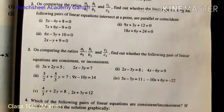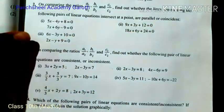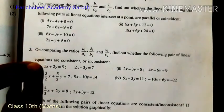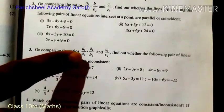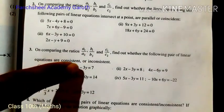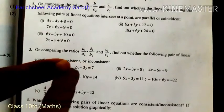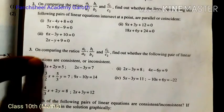Good evening everyone. Last time we discussed the second question — comparing the ratio and finding whether equations intersect at a point, are parallel lines, or coincident. In this video, we discuss the third question on comparing the ratios a1/a2, b1/b2, c1/c2 to find out whether the following pair of linear equations are consistent or inconsistent.